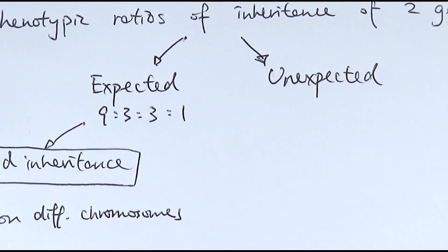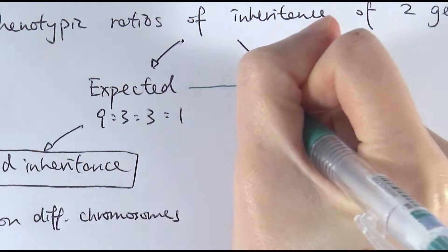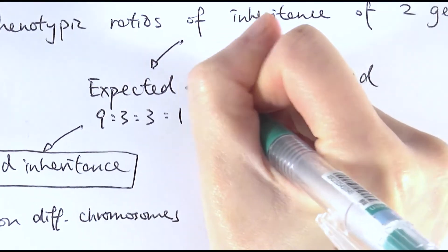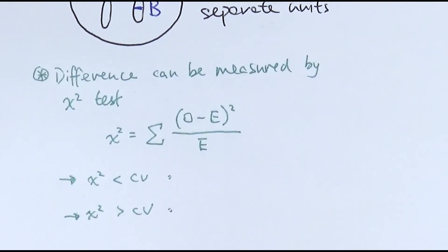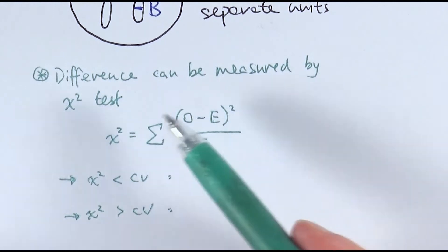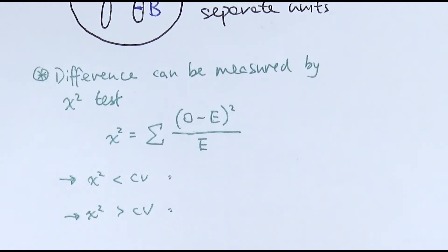In this case, you will need to calculate the size of the difference between the two. The way to do that is by doing a chi-squared test. Chi-squared test is a statistical test that allows you to see if there is a significant difference between the observed and expected ratios. Usually we do this by looking at the number of each phenotype in the observed and expected versions, then use this equation to calculate them. Usually in this kind of question, they will give you a table listing out O and E and all those calculations to help you in that process.